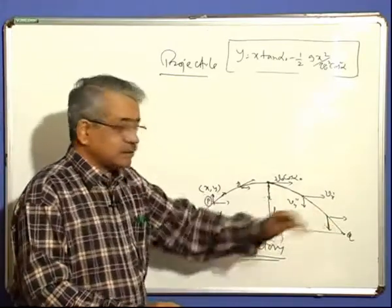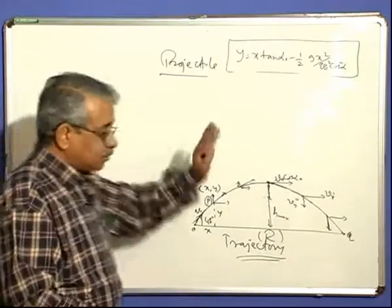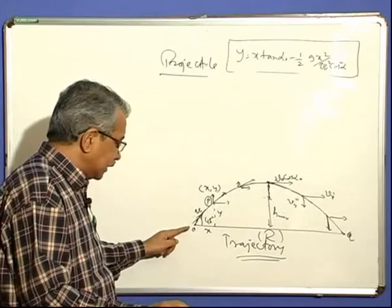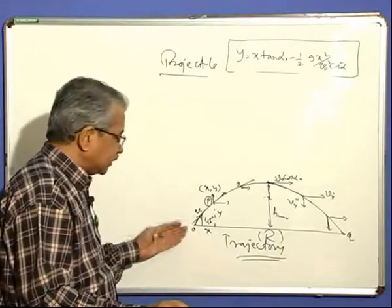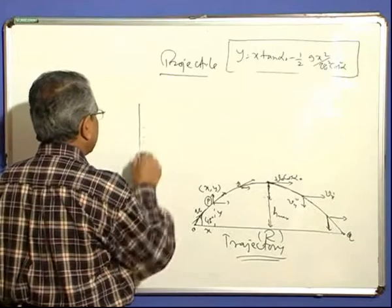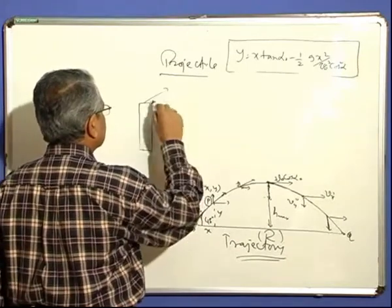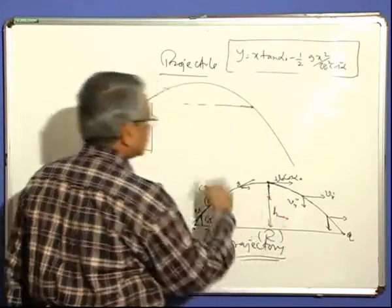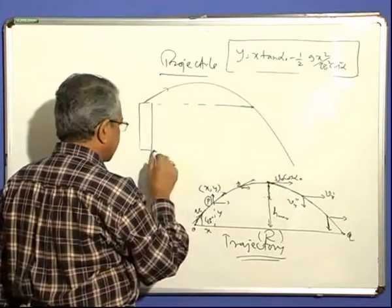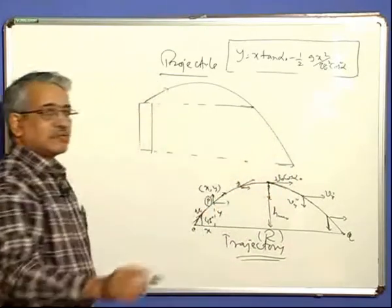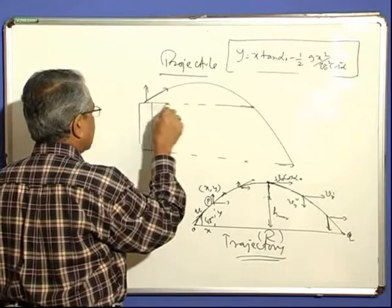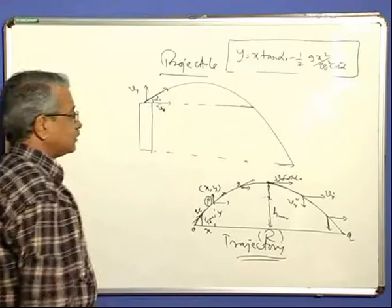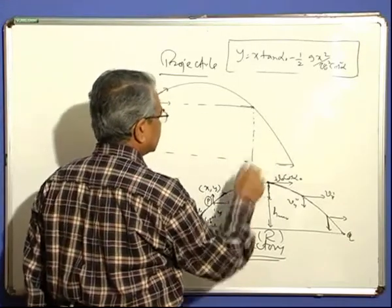In the more general case, you can start from anywhere and the body may land anywhere — not necessarily at the same horizontal level. For example, projecting from the top of a building: the body goes up and comes down to a lower level. The trajectory equations still apply. At any point, you can resolve the velocity into Vx = V₀ cos α₀ and Vy = V₀ sin α₀ − g·t, and work out the range from the equations derived.